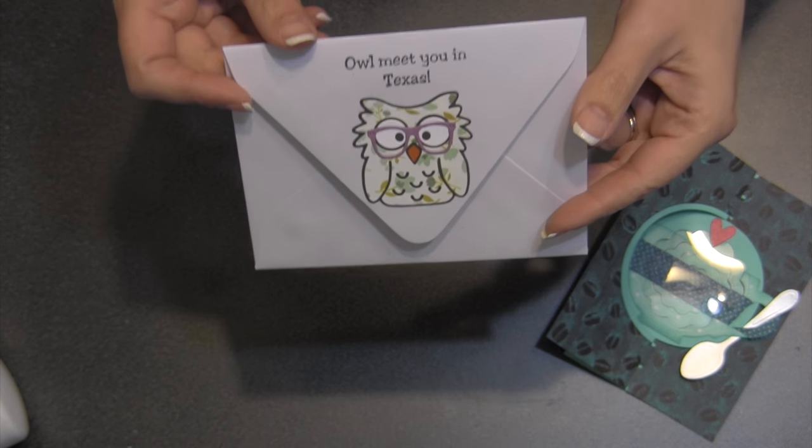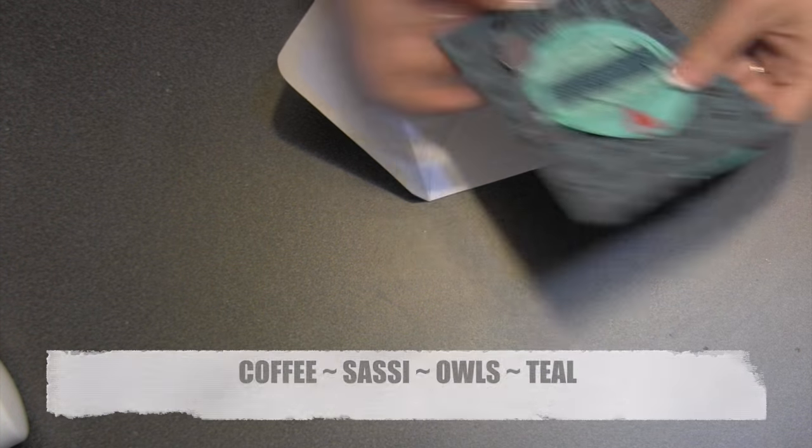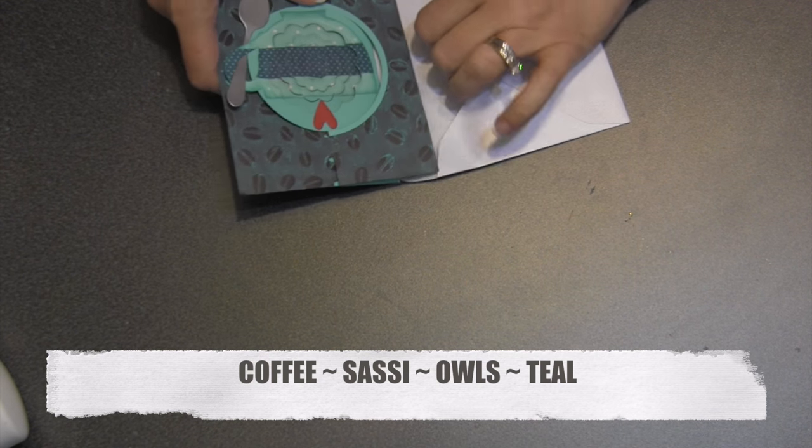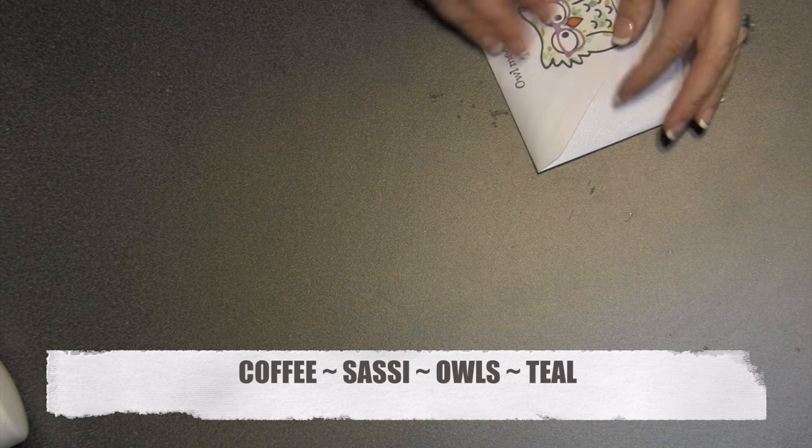You were worried I forgot about owls. I didn't. I put an owl on the back of the envelope, and I found this little greeting that says I will meet you in Texas for when Kelly comes to visit. So I got all four of her words into between the card and the envelope. It is just a standard A2, it's very flat, it will mail for a single stamp.